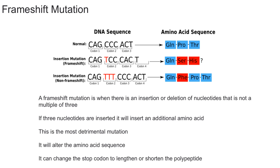To summarize, the most important takeaway is that a frameshift mutation will either insert or delete nucleotides — either one or two nucleotides — that are not a multiple of three. These mutations often cause the protein to be cut short and result in a dysfunctional protein.